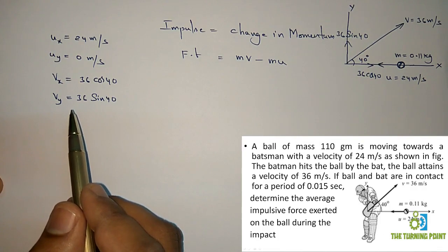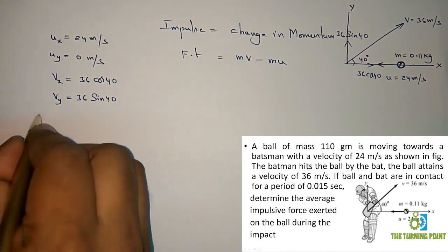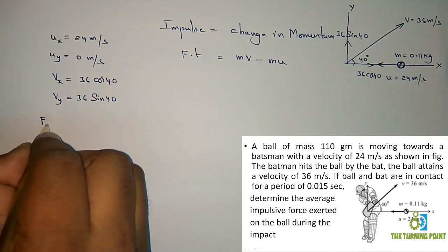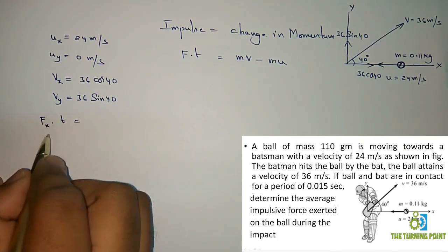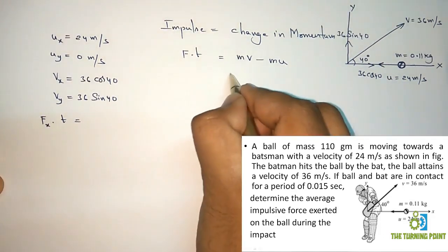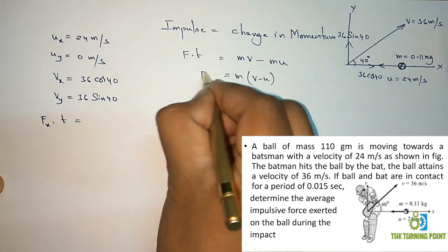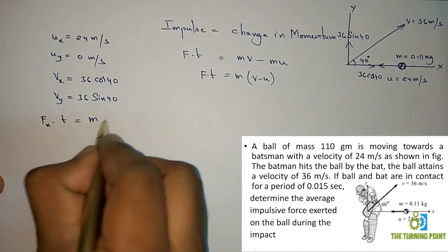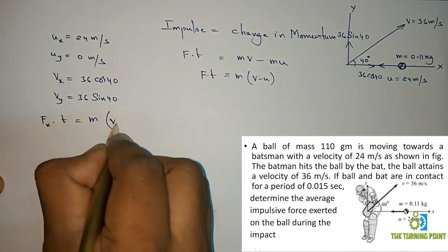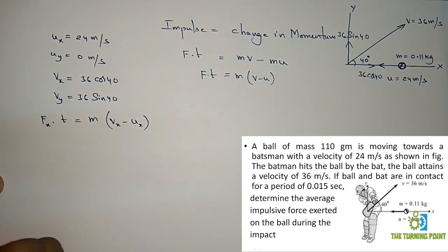Let us apply this principle along the x-direction and y-direction. Along x-direction: the force component along x multiplied by time equals impulse along x-direction. Taking mass common, F×t = m×(v − u). So the product of mass and the difference of final velocity and initial velocity along x-direction gives the impulse.